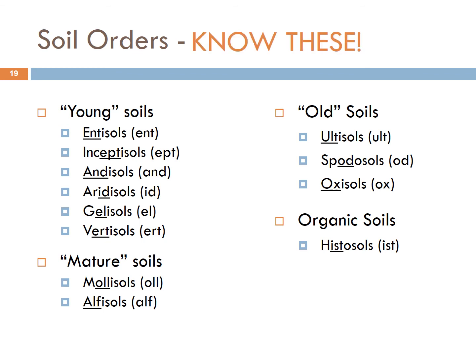See the big blinking words — know these. You need to understand what these abbreviations refer to. Entisols are abbreviated as ENT at the end of the soil taxonomic name. If a soil taxonomic name ends in ENT, you know the soil order is an Entisol. This is important because I will put a giant scary-looking taxonomic name on the exam and ask you to identify the soil order — you'll just look at those last few letters and say 'oh, it ends in OD, that means it's a Spodosol,' or 'it ends in IST, that means it's a Histosol.' So make sure you write these down — they are very important.